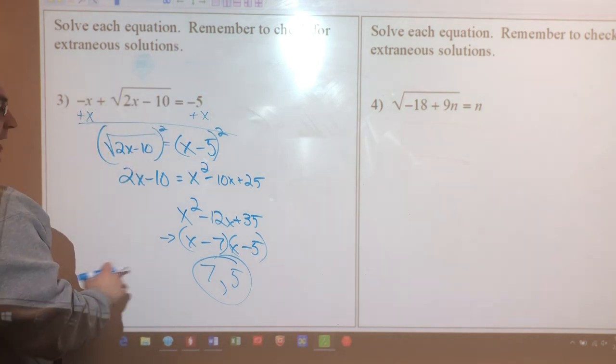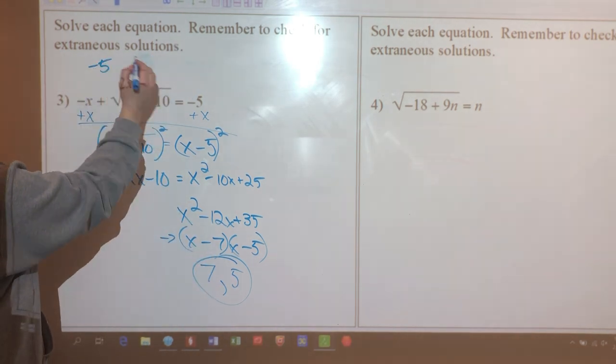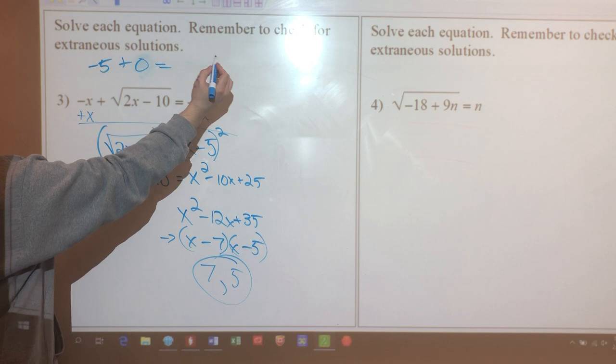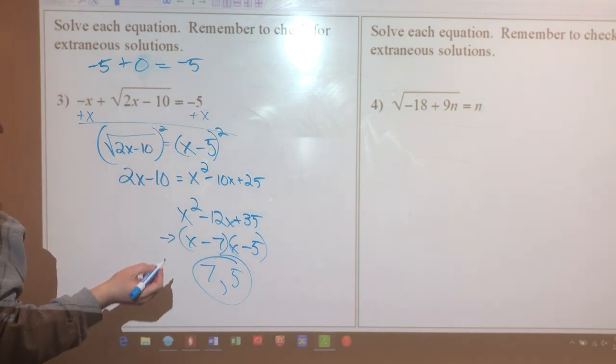Plugging in 5 will give me negative 5 plus 10 minus 10, which is 0, and does negative 5 equal negative 5? That's also true, so both of these solutions work out.